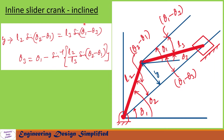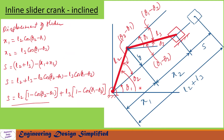From this equation we can write theta 3 equal to theta 1 minus sin inverse of (L2 divided by L3) times sin(theta 2 minus theta 1). When crank angle theta 2 equals theta 1, these two links fall in line with the inclined line.